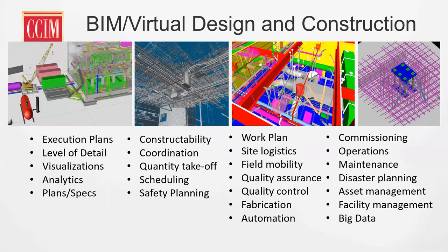Because we've got all this information and data in the model, all sorts of different analytics can happen — both in the planning phase, looking at what's a better and more cost-effective way to build, and also analytics that transfer downstream through the construction phase and through the operational phase. From this model we can pull our traditional plans and specs needed for contract and permit, including all the wet stamping and paper systems. The constructability of this model allows us to really look at how the coordination of the building is going to come together.